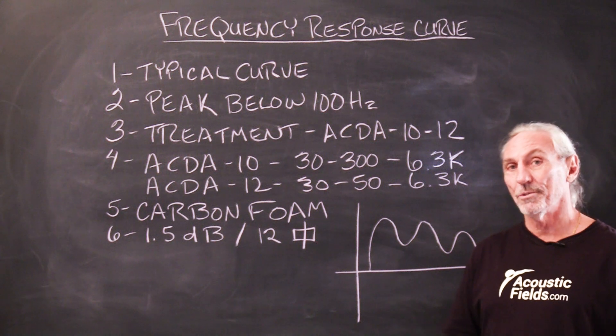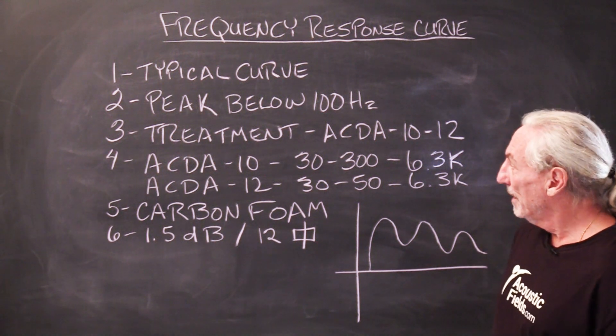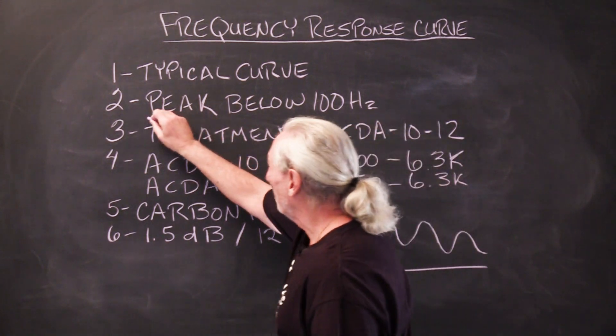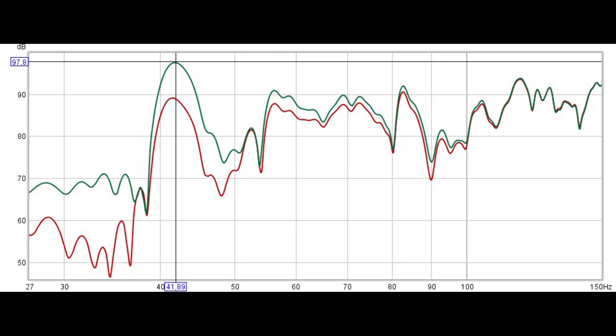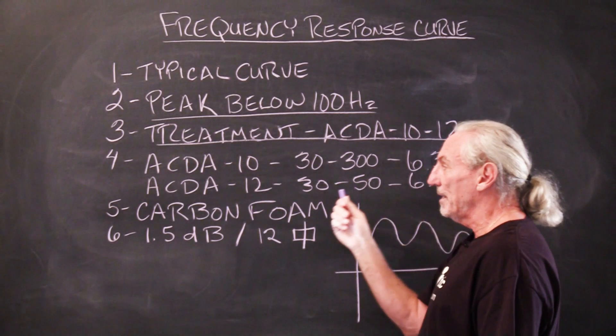We're going to illustrate that in upcoming videos, but we want to address this peak below 100 cycles that you see in the graphic. Now how do we do that? We have two treatment options: our ACDA-10 and ACDA-12.